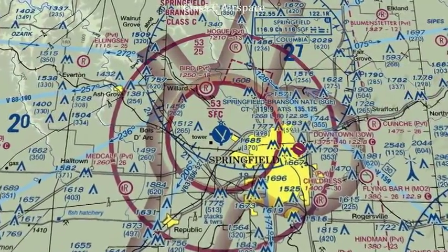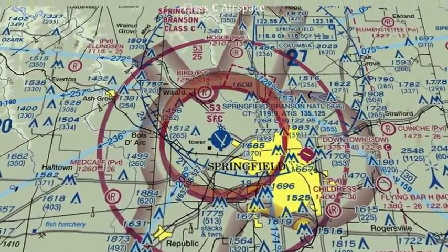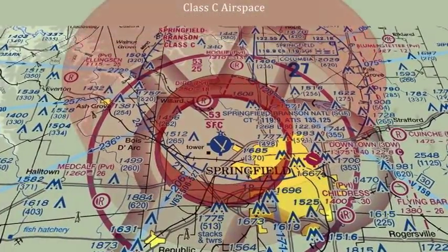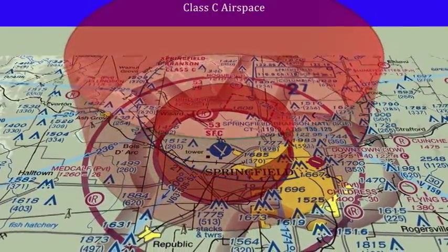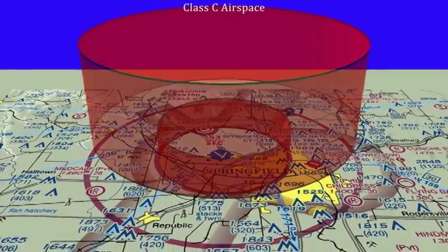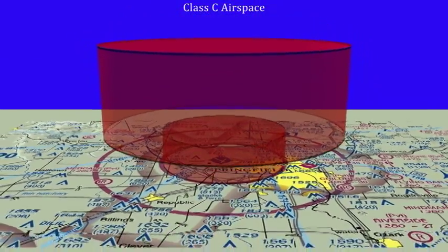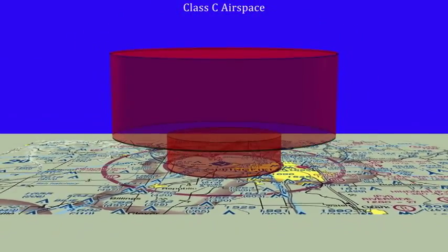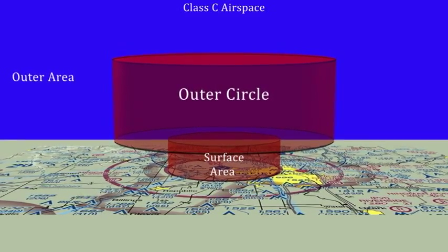Class C airspace is controlled airspace. It is designed for airports having a significant amount of air traffic, but not enough to require the creation of a Class B airspace area. It is comprised of a surface area, an outer circle, and an outer area.